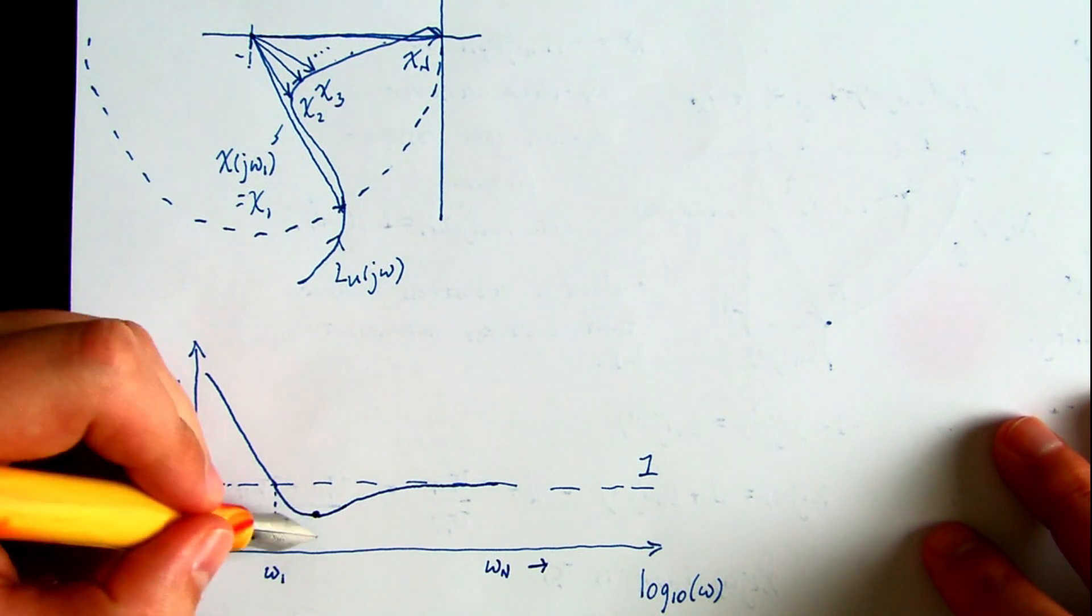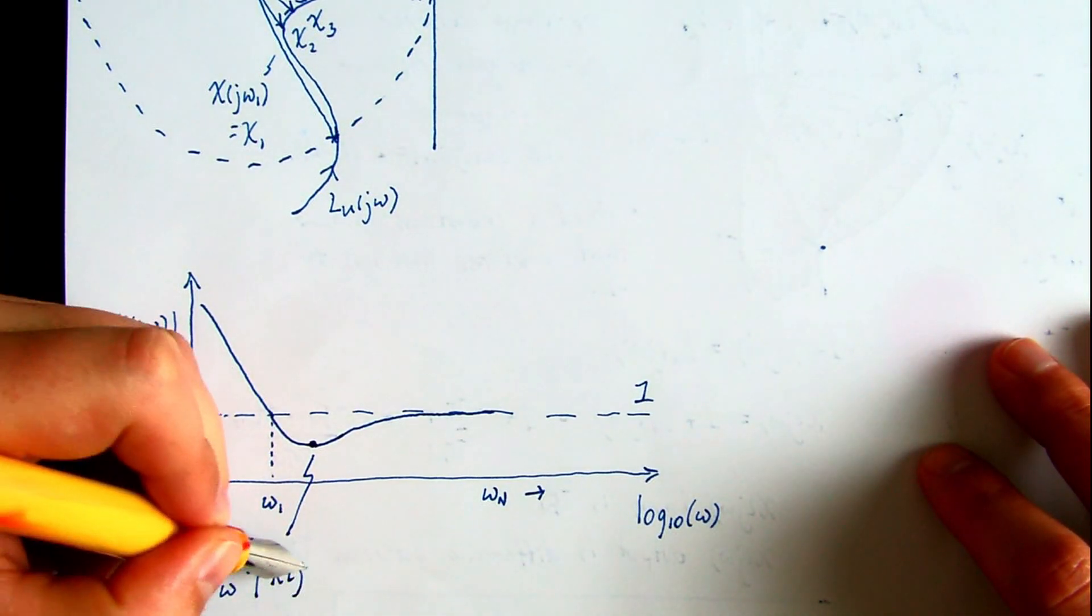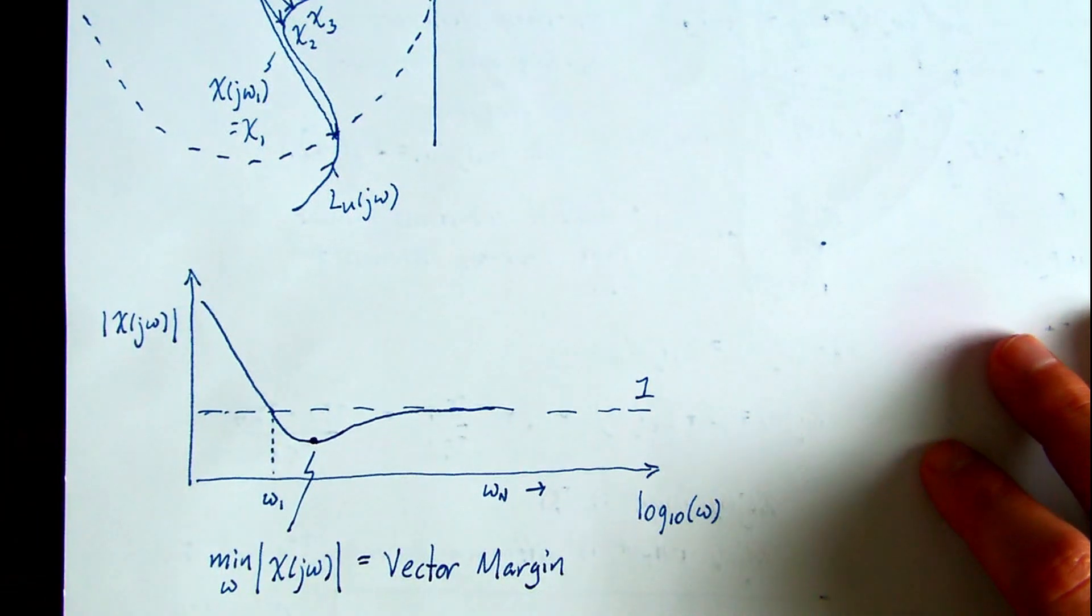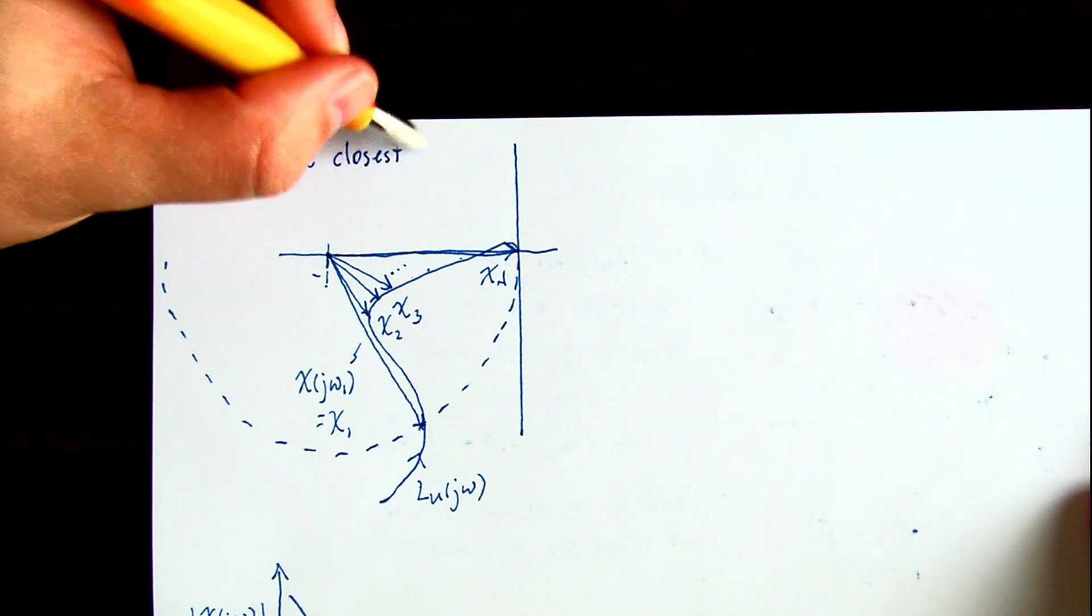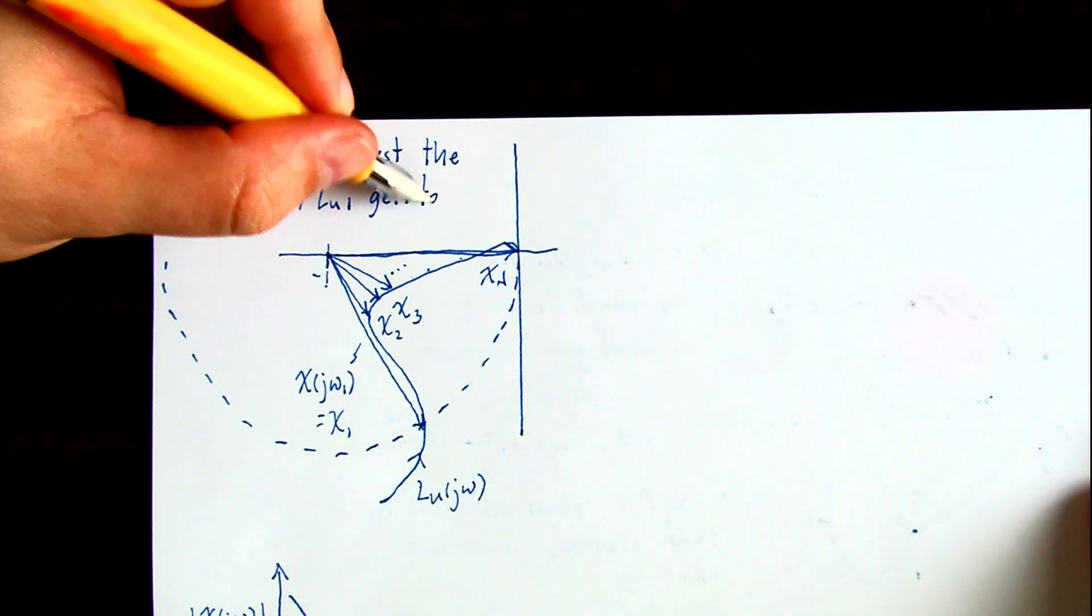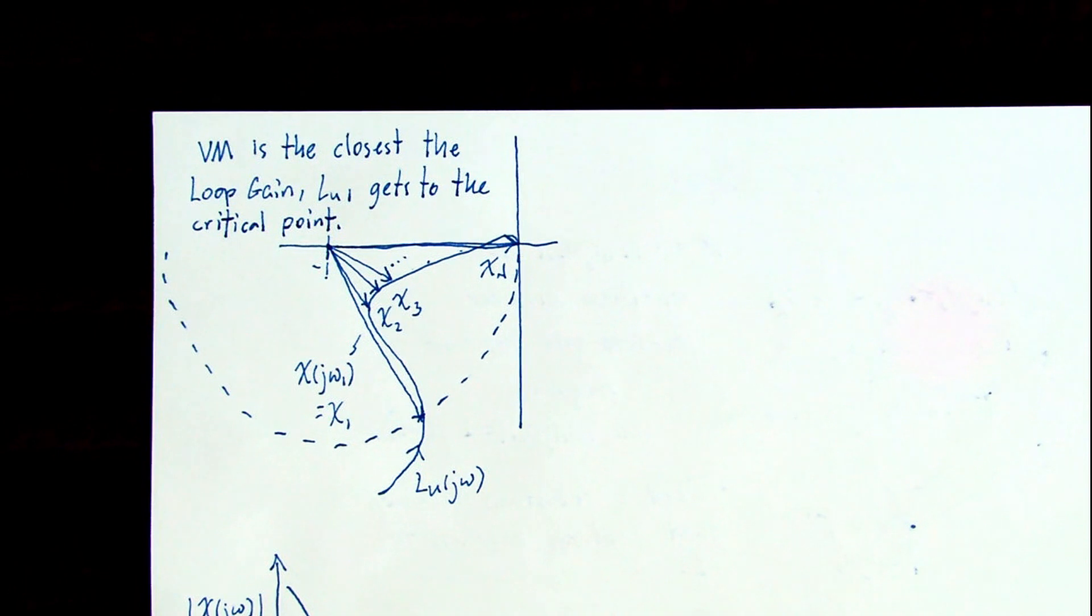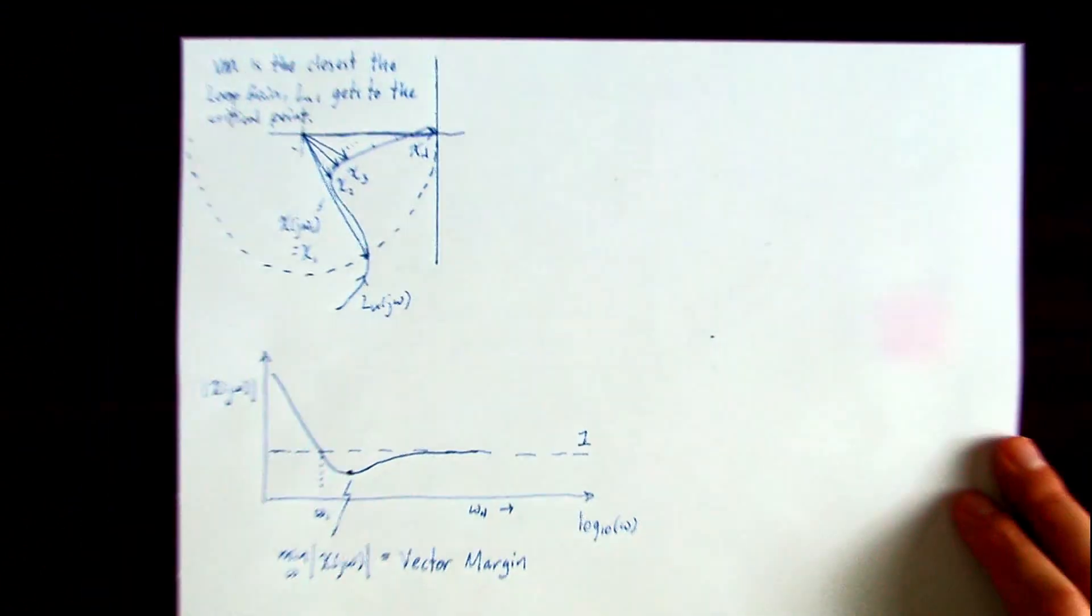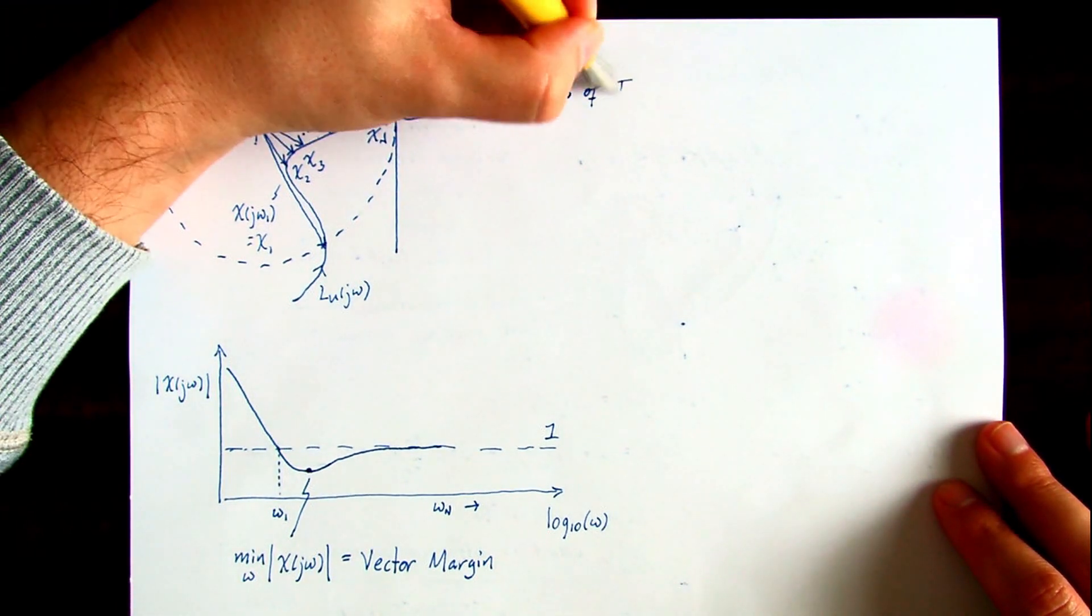We can pick off that minimum value at an intermediate frequency between the loop gain crossover and the phase crossover frequency. And that minimum value of return difference is called the vector margin. So vector margin is the closest point of approach of the loop gain to the critical point. Gain and phase margin just look at two particular points on the loop gain. Vector margin says what's the closest over a range of frequencies of interest that the loop gain gets to the critical point.